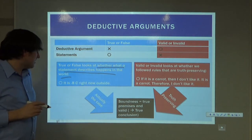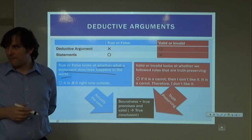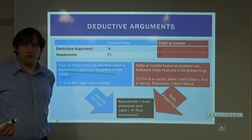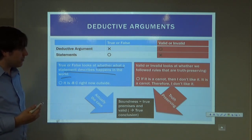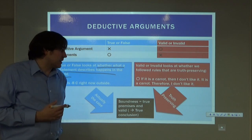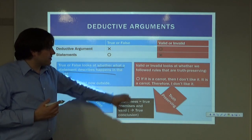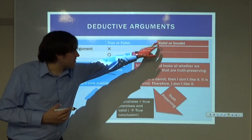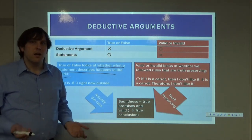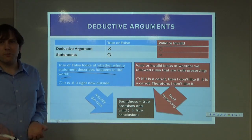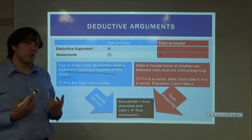Whether a claim is true or false looks at whether a statement describes what happens in the world. Something like 'it is minus eight degrees centigrade outside right now' is either true or it is false. Something like 'if it is a caret, then I don't like it; it is a caret, therefore I don't like it' is an entire argument, so this is either valid or invalid. In this case it's valid — it's modus ponens.